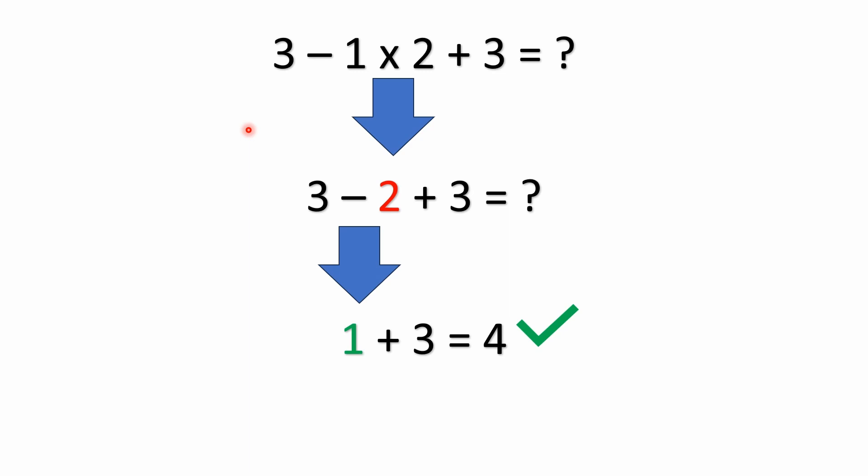We do have multiplication, so we actually perform the multiplication first. 1 times 2 is 2. And then as you see here, it's 3 minus 2.